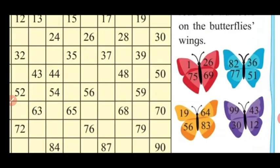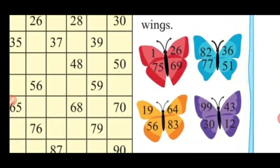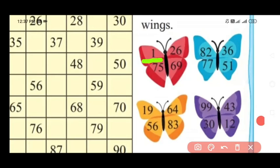Now look at this butterfly's wings. Look at the first, i.e., red color butterfly wings and read the number which I am underlining with green color. Yes, this number is 1. Yes, this number is 75. Right, this number is 26. Yes, this number is 6. Yes, this number is 69.